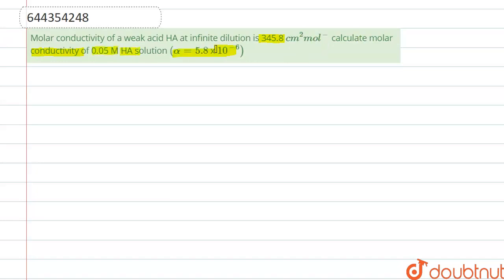Here alpha is 5.8 × 10⁻⁶. So here alpha is the degree of dissociation, which is also equal to lambda M divided by lambda M infinity.